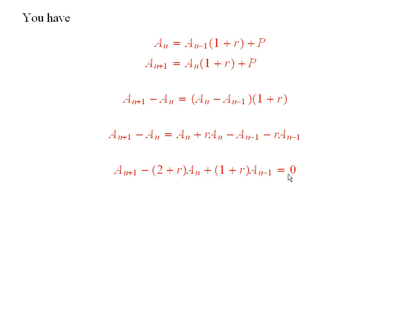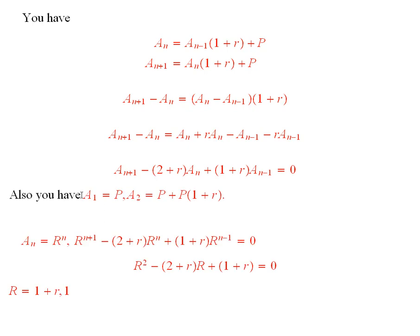So that's the recurrence relation for a sub n, which we should be able to solve. In addition, we must have these initial conditions, which were described in the problem. A1 needs to be p, and a2 needs to be p plus p times 1 plus r.